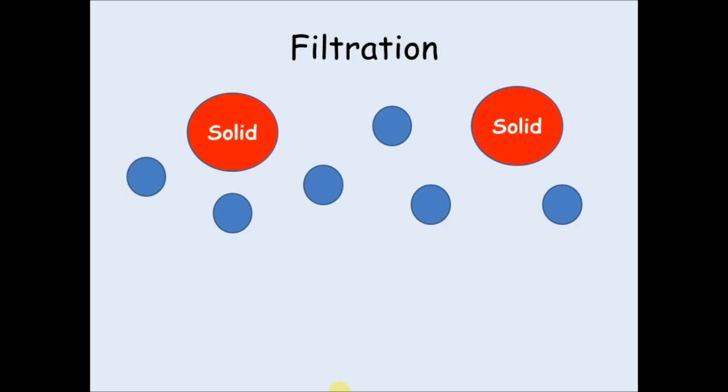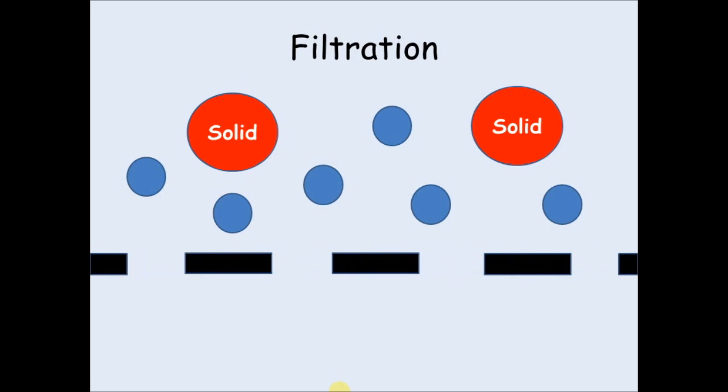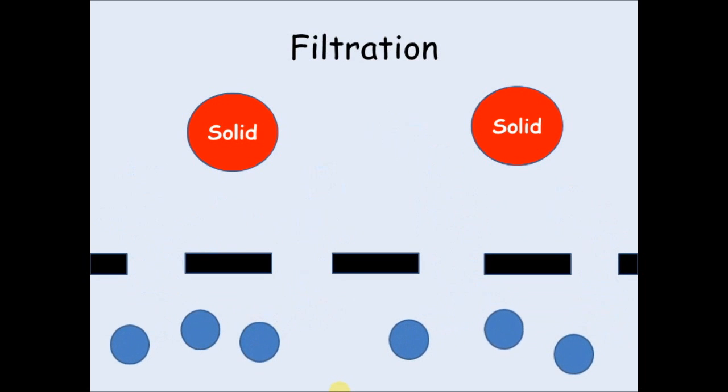Filtration in the lab works by the same principle, but on a much smaller scale. It is used to separate solids from liquids. The solid particles are much larger than the liquid particles. So when you put them through filter paper, the liquids can easily pass through.